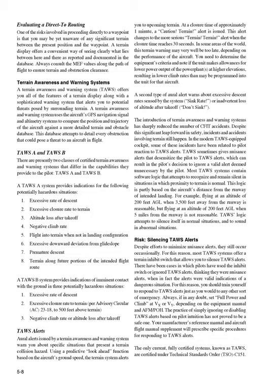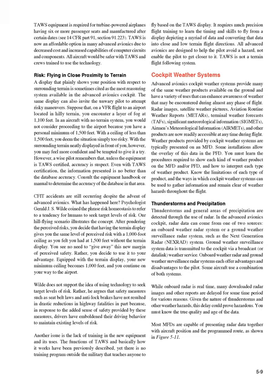Your manufacturer's reference manual and aircraft flight manual supplement will prescribe specific procedures for responding to TAWS alerts. The only current, fully certified systems, known as TAWS, are certified under Technical Standards Order TSOC151. TAWS equipment is required for turbine-powered airplanes having six or more passenger seats and manufactured after certain dates, per 14 CFR Part 91, Section 91.223. TAWS is now an affordable option in many advanced avionics due to decreased cost and increased capabilities of computer circuits and components. All aircraft would be safer with TAWS and crews trained to use the technology.